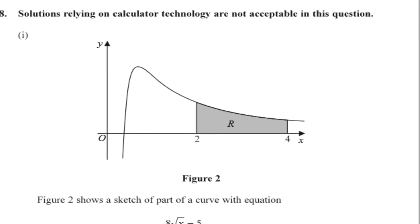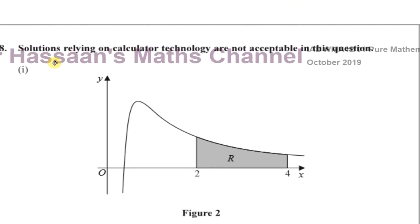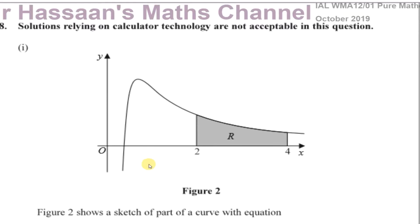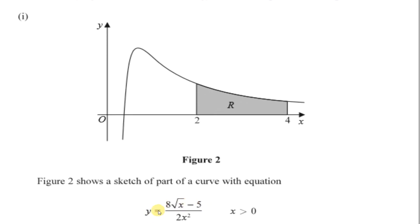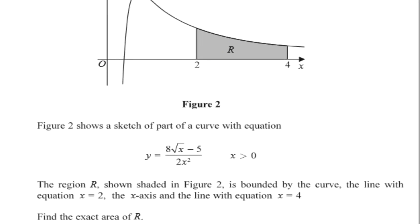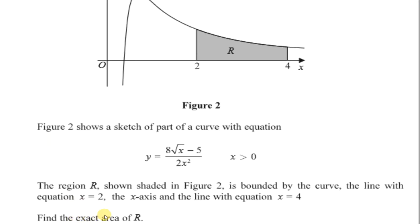The question tells us that solutions relying on calculated technology are not acceptable. Figure 2 shows a sketch of part of a curve with the equation y equals 8 times root x minus 5, all over 2x squared, where x is greater than 0. We are asked to find the exact area of the shaded region R, enclosed by the curve, the line x equals 2, the x-axis, and the line x equals 4.